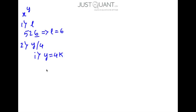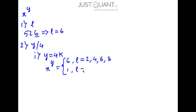In such a case, the unit digit of x to the power of y will be equal to 6 if the value of l is either 2, 4, 6, or 8. And the unit digit of x to the power of y will be equal to 1 if the value of l is 3, 7, or 9. So basically, if l is an even number the unit digit is 6, and if l is odd it is 1. If l is equal to 5, then we will always see that the unit digit is 5.